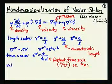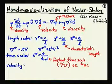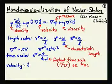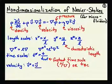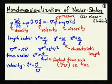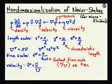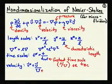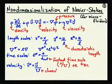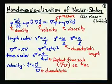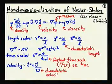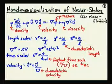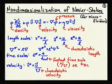We also need to non-dimensionalize the velocity by dividing it by some reference velocity U — the same capital U used to describe the reference time. This is some characteristic velocity from the boundary conditions, such as the inlet velocity of a flow or the speed with which some boundary is moving.